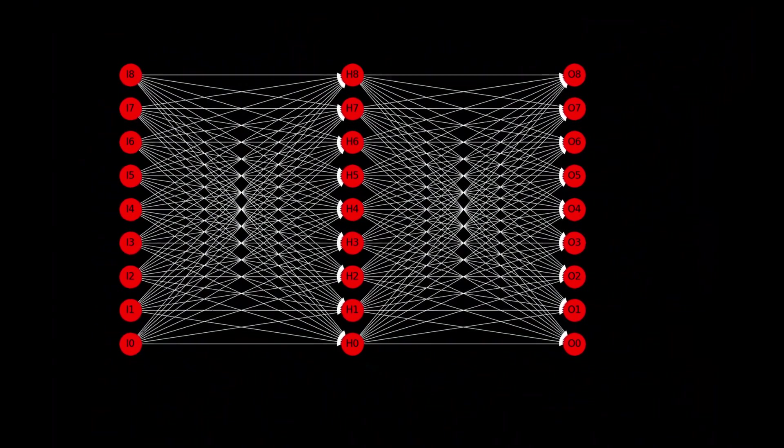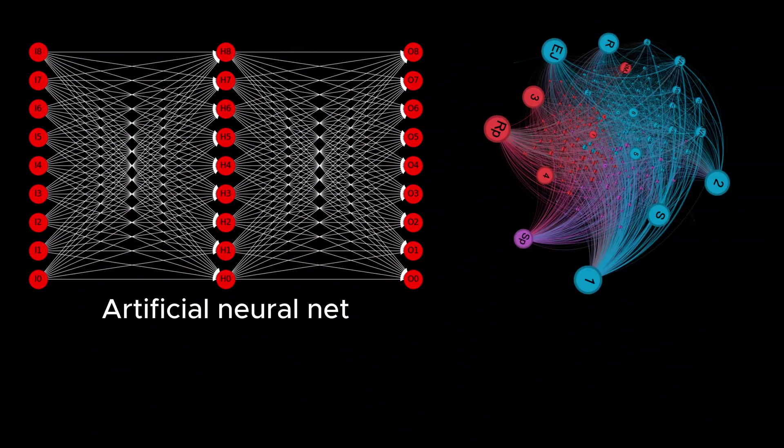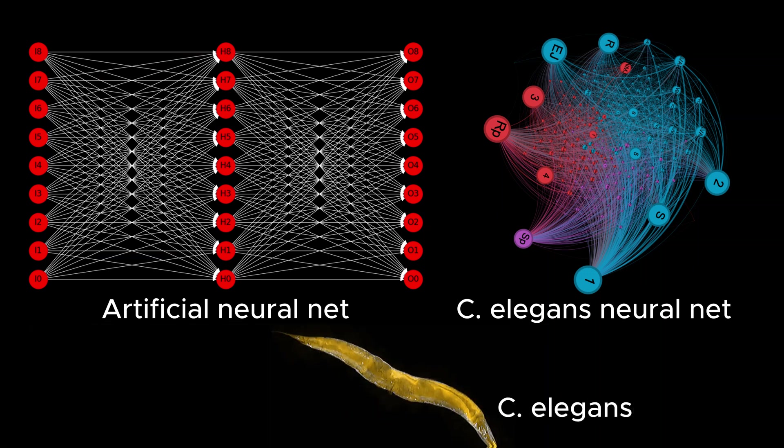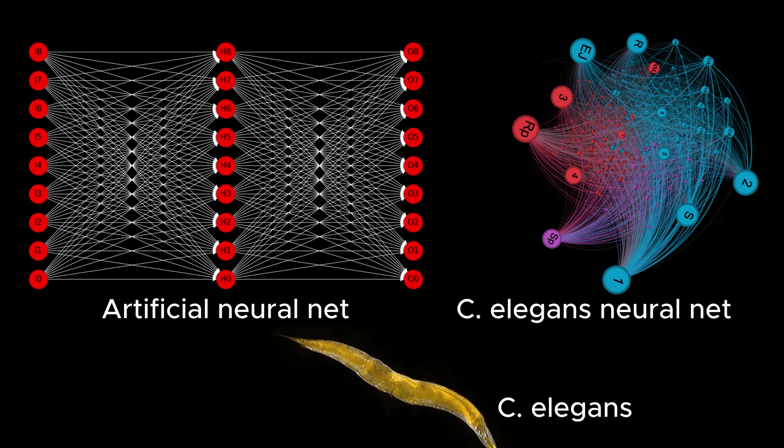Can we unlock the secrets of large language models by studying the neural network of a simple living creature? An open problem in AI that is an active area of research is the black box problem of artificial neural networks.